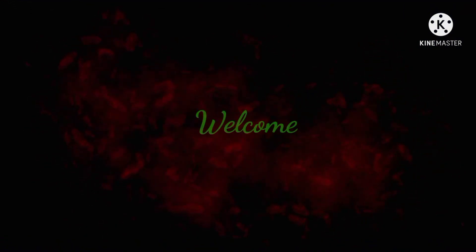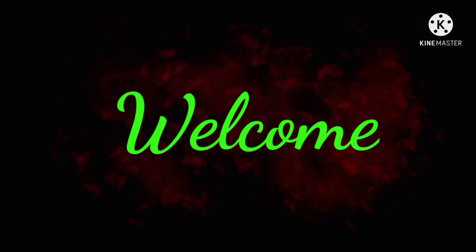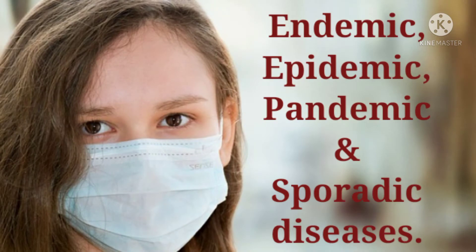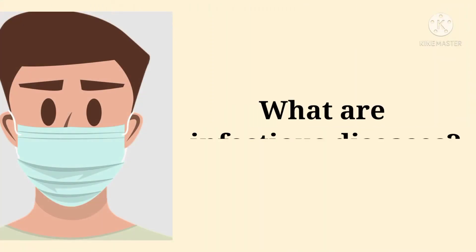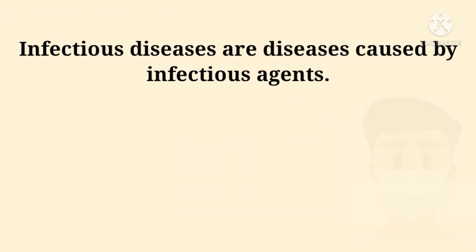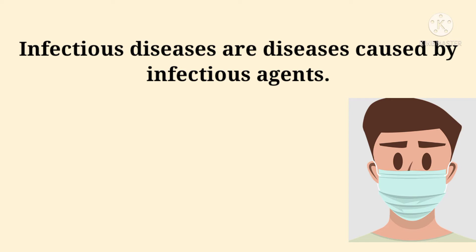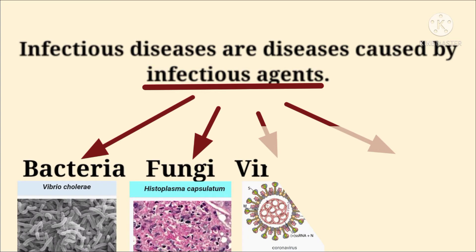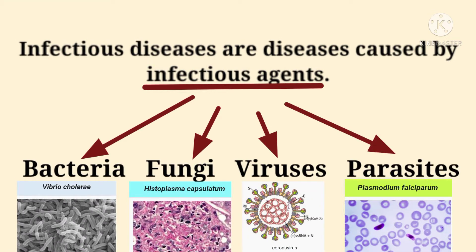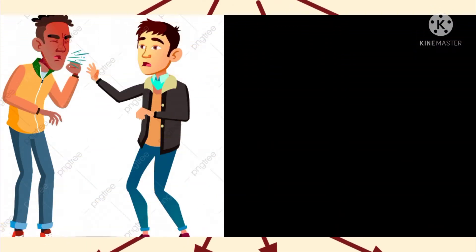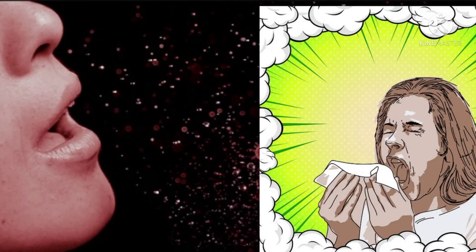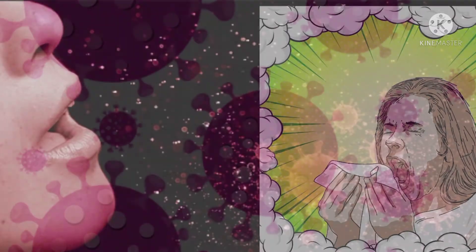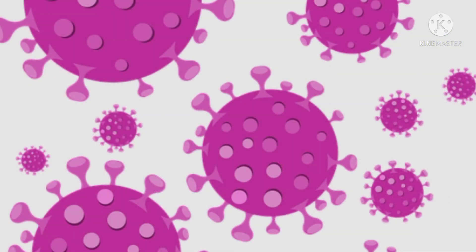Hello friends, welcome to my video. In this video we are going to see about endemic, epidemic, pandemic, and sporadic diseases. First we'll see what are infectious diseases. Infectious diseases are diseases caused by infectious agents, which include bacteria, fungi, viruses, and parasites. To prevent the spread of infectious disease, we must understand how infectious agents spread.